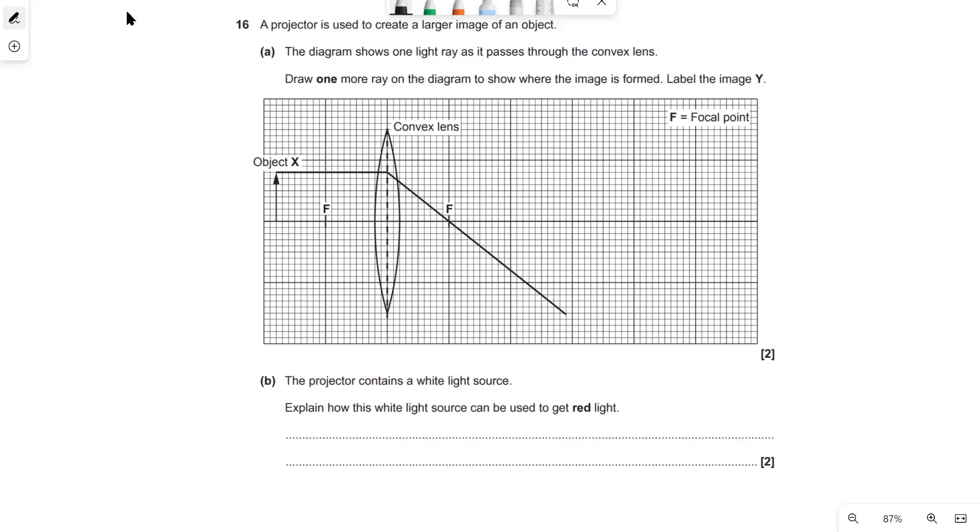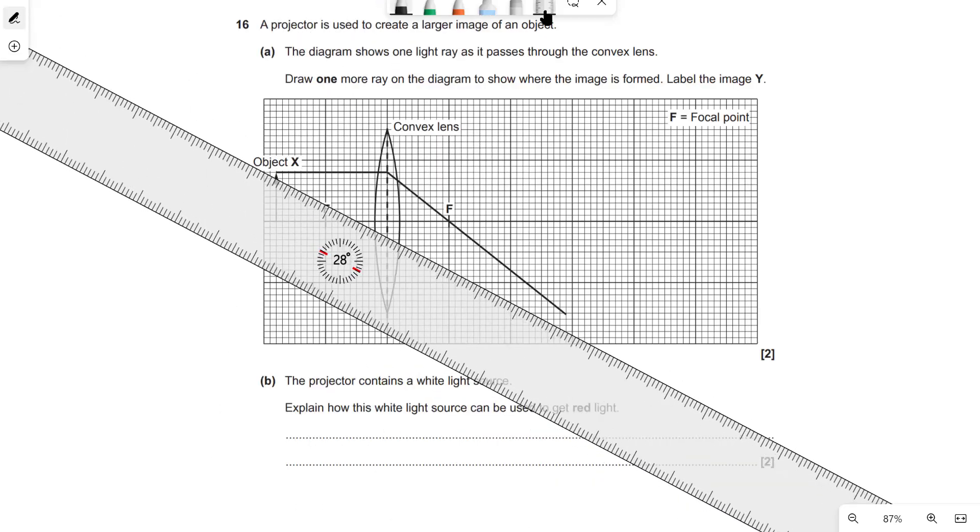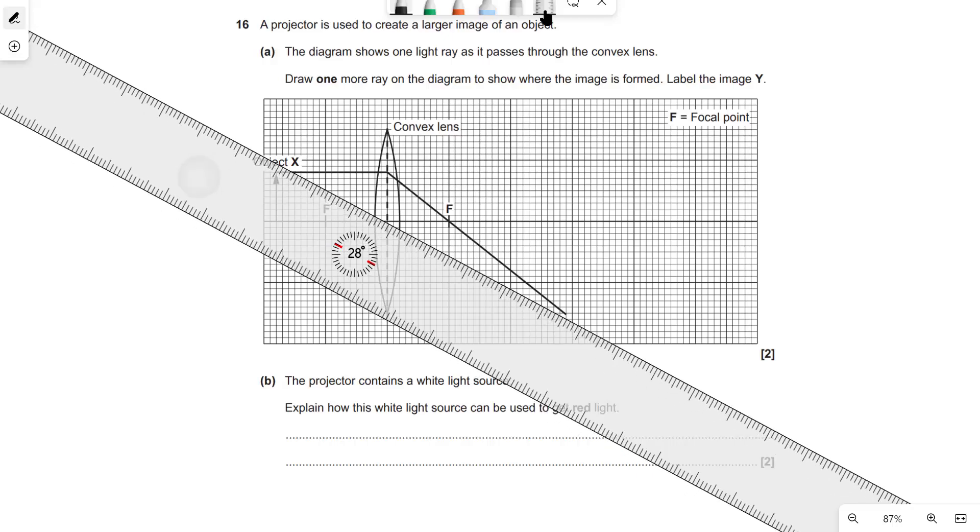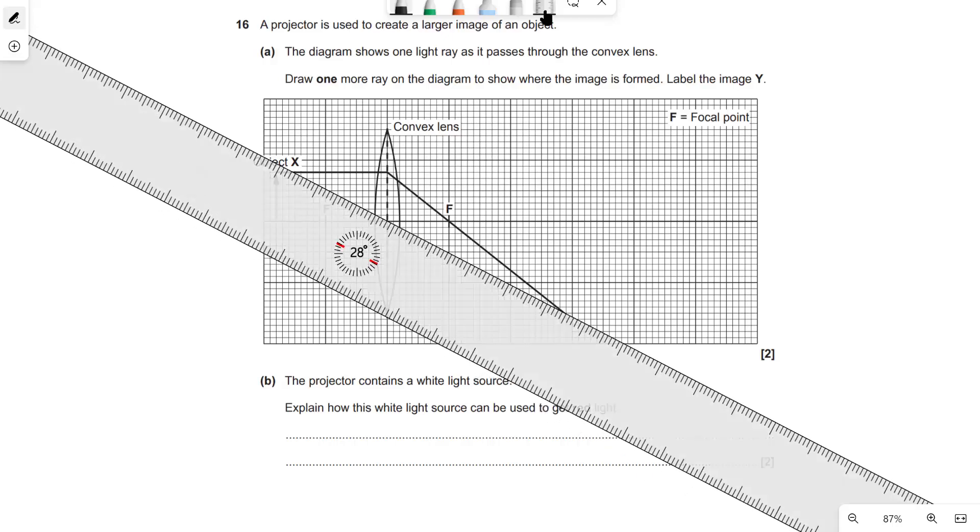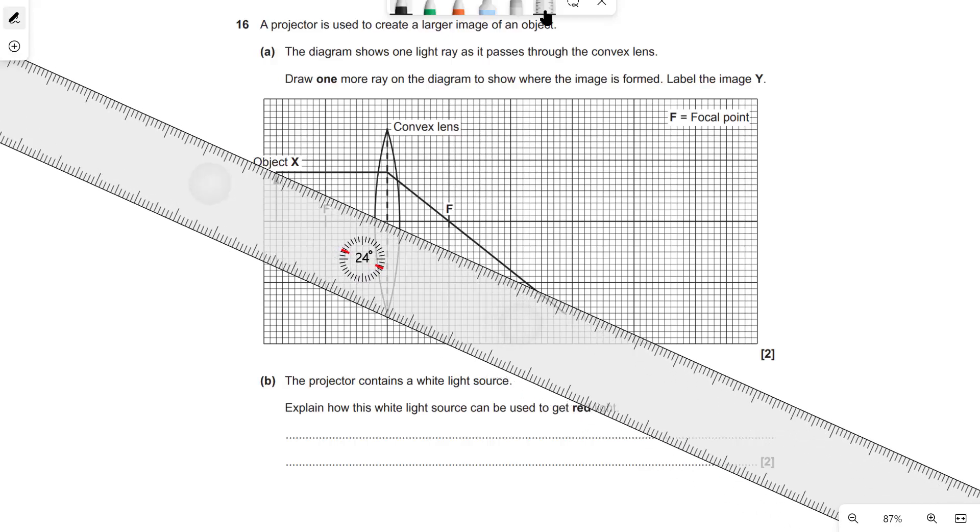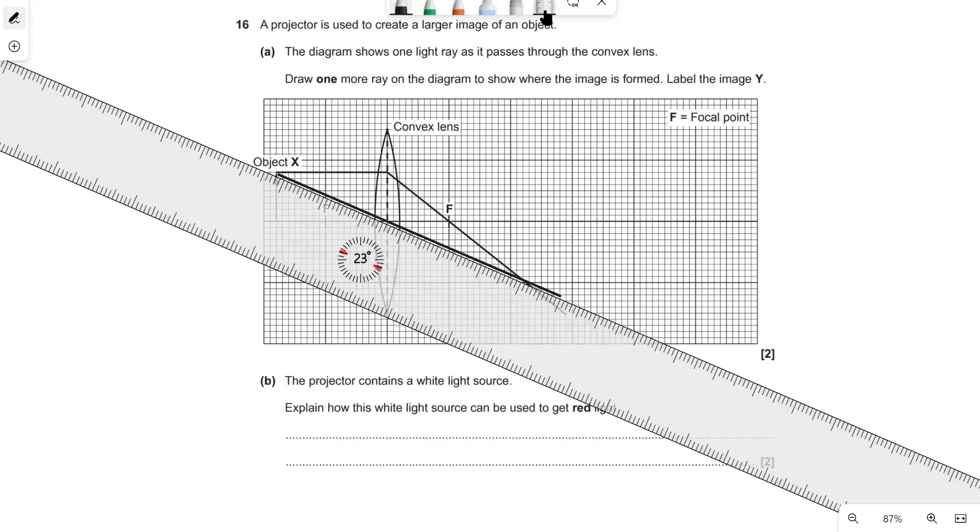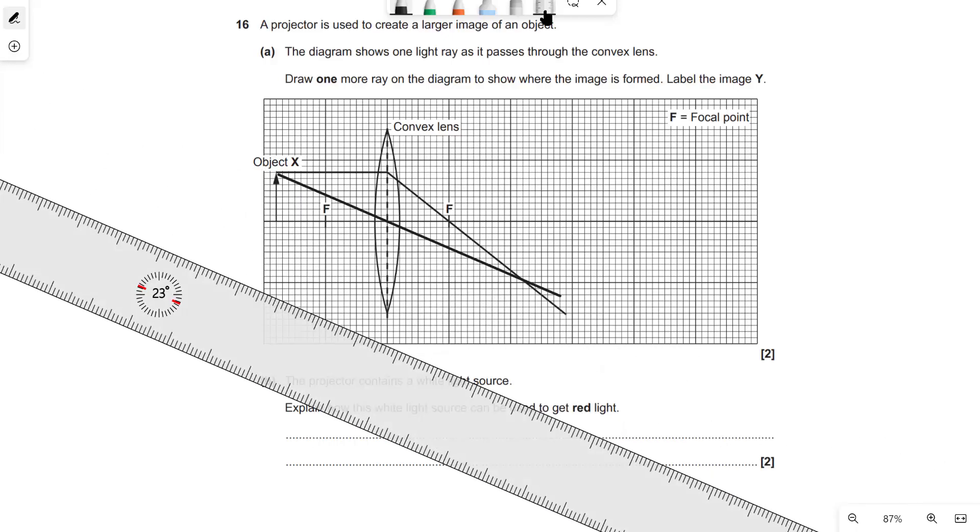Okay next one this one is about lenses so projector is used to create a large image of the object draw one more ray to show where the image is formed now one of the easiest ways to tackle this is to always pick a line that goes through the center of the lens and if it does it will just go on completely undisturbed let's see if I can manage to do that on my digital whiteboard so it's going to go kind of like this.